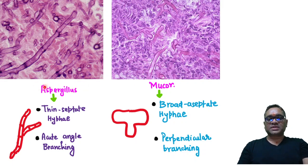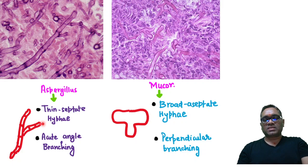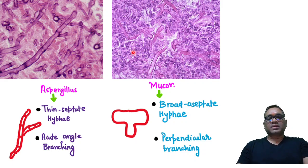How will you identify Aspergillus? They will be having thin septate hyphae — bamboo-stick-like septa — and they will be having acute angle branching. You can see there are thin septate hyphae, septa are visible here, and there is acute angle branching at this area. That is the feature of Aspergillus.